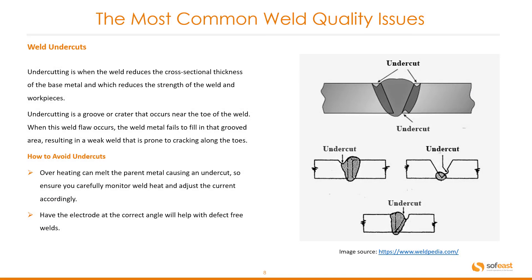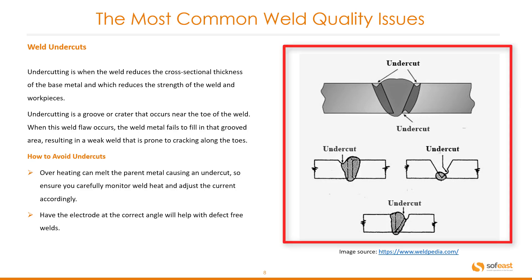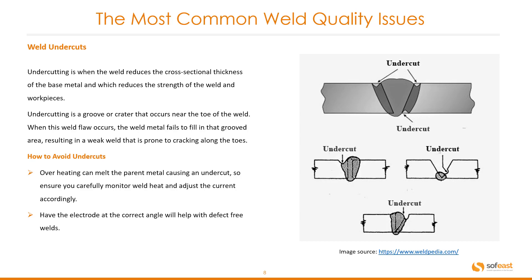Undercutting is when the weld reduces the cross-sectional thickness of the base metal, which reduces the strength of the weld and the workpiece. Undercutting is a groove or crater that occurs near the toe of the weld. When this weld flaw occurs, the weld metal fails to fill in the grooved area, resulting in a weak weld that is prone to cracking along the toes — you can see a good example in this image. To avoid undercuts, carefully monitor weld heat and adjust the current accordingly, and have the electrode at the correct angle.